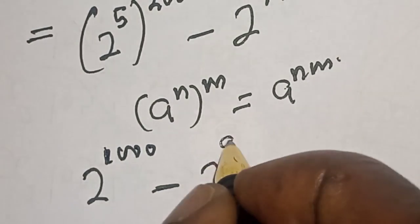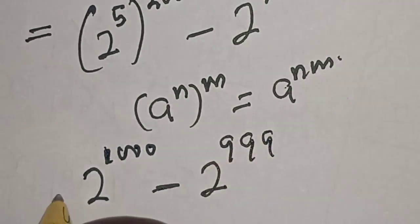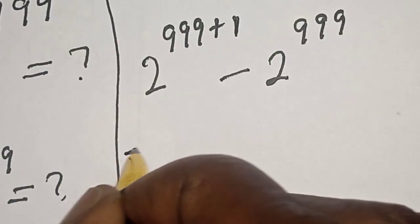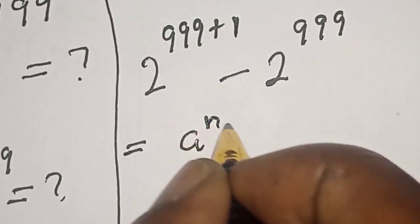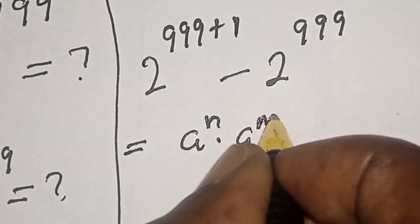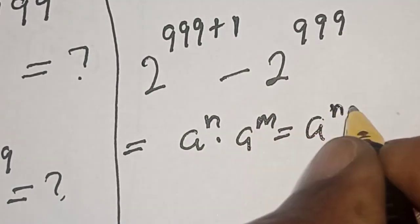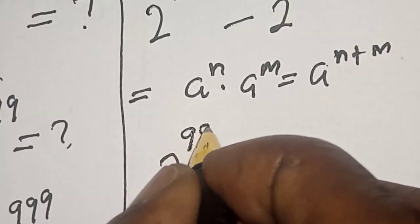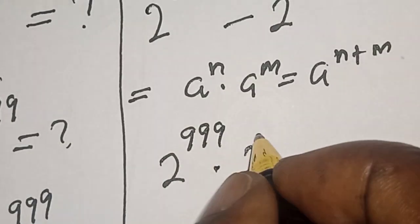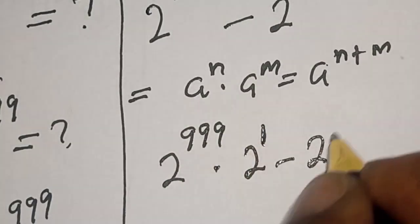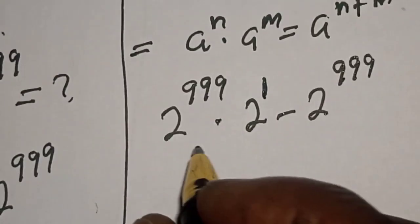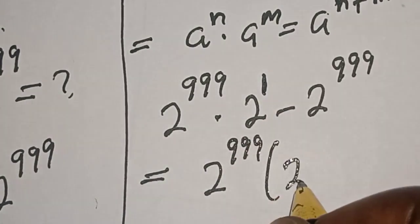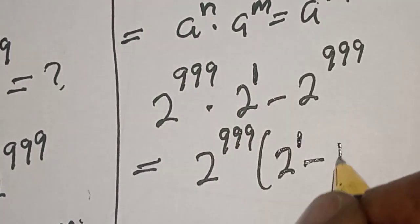Minus 2 raised to power 999. Now using the rule that a raised to power n multiplied by a raised to power m equals a raised to power n plus m, this becomes 2 raised to power 999 multiplied by 2 raised to power 1, minus 2 raised to power 999.